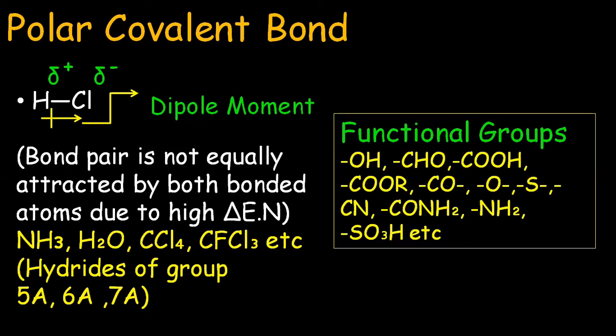In organic chemistry the functional groups like alcohols, aldehydes or alkanals, carboxylic acids, esters, ketones, ethers, thioethers, nitriles, amides, amines, sulfonic acids, all are polar. They contain the polar covalent bonds.